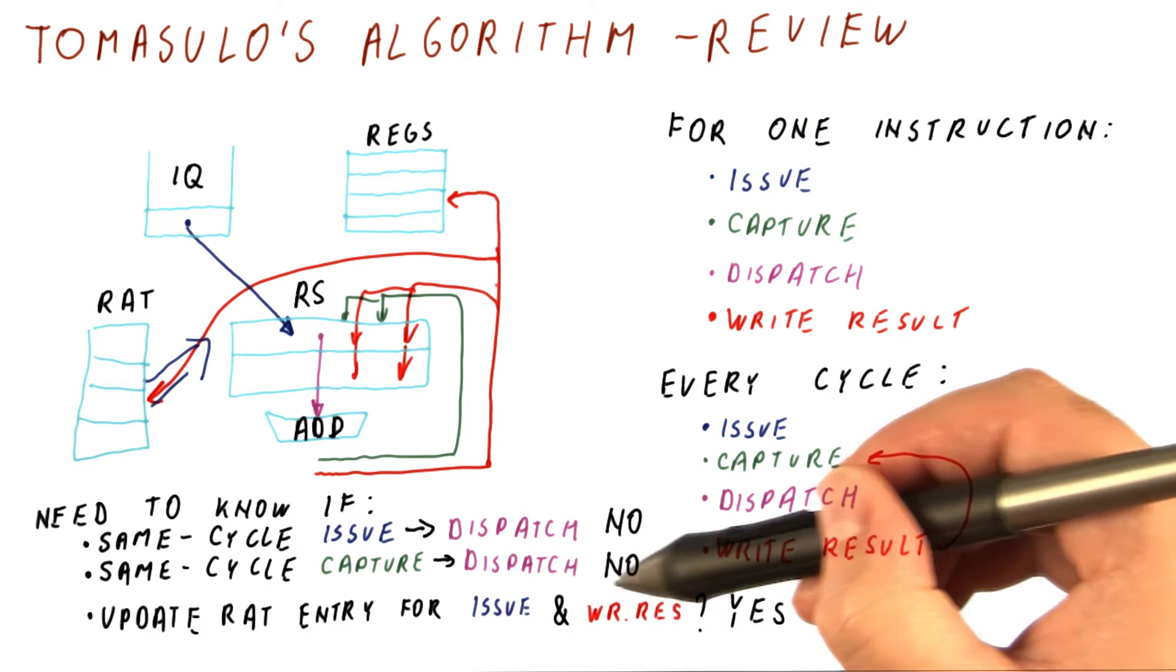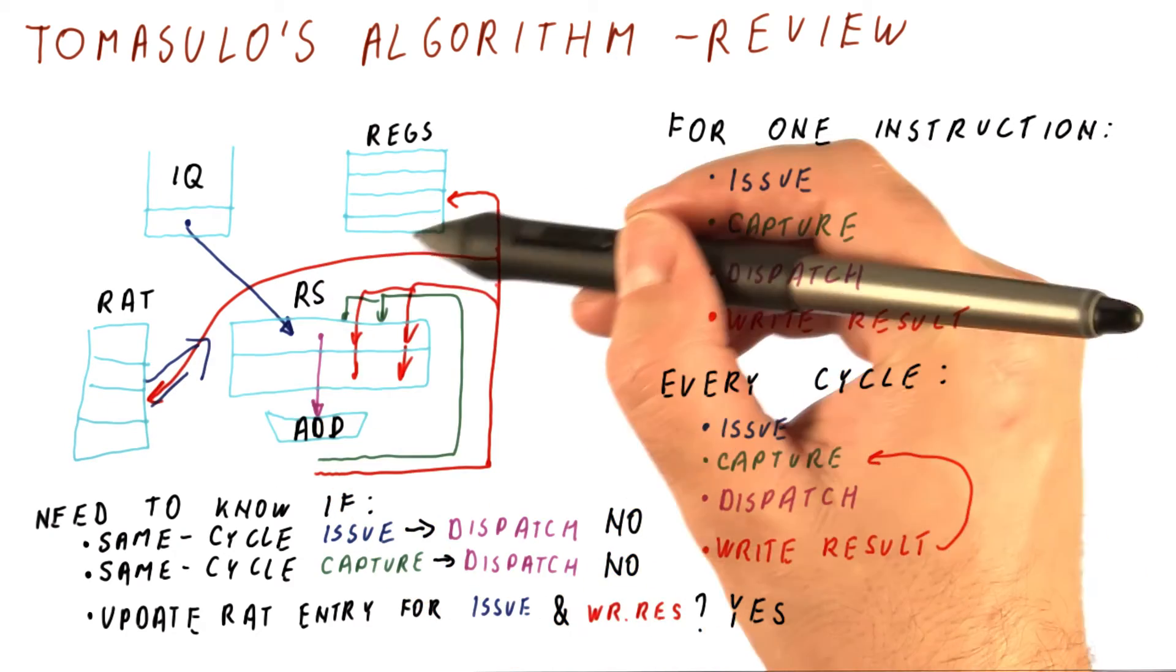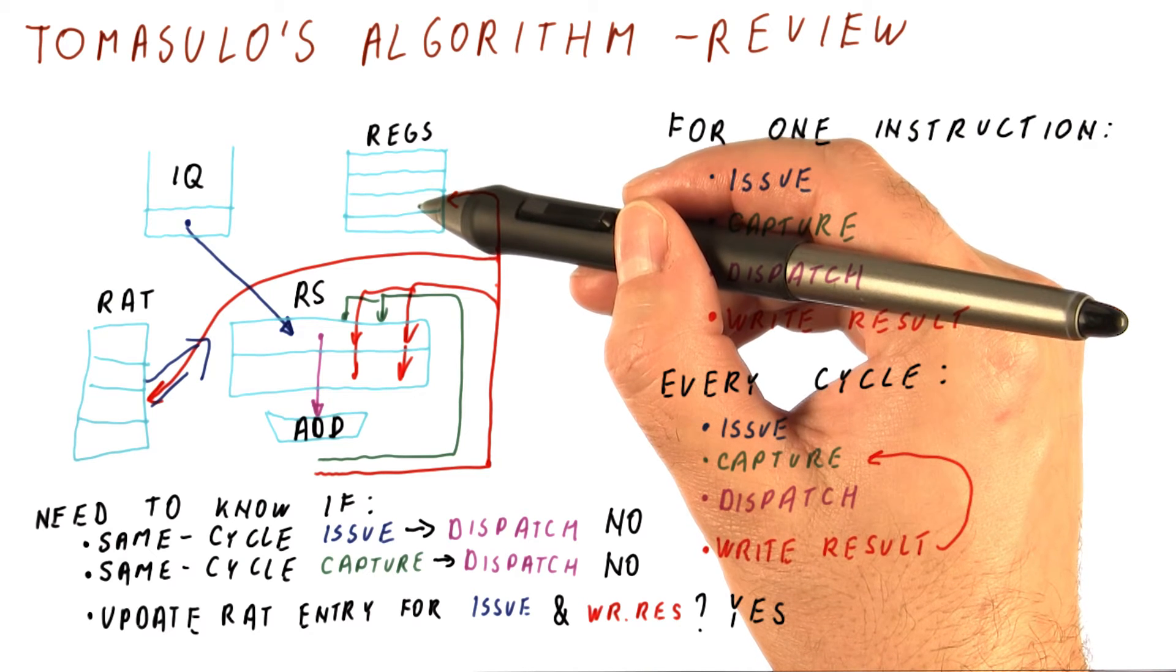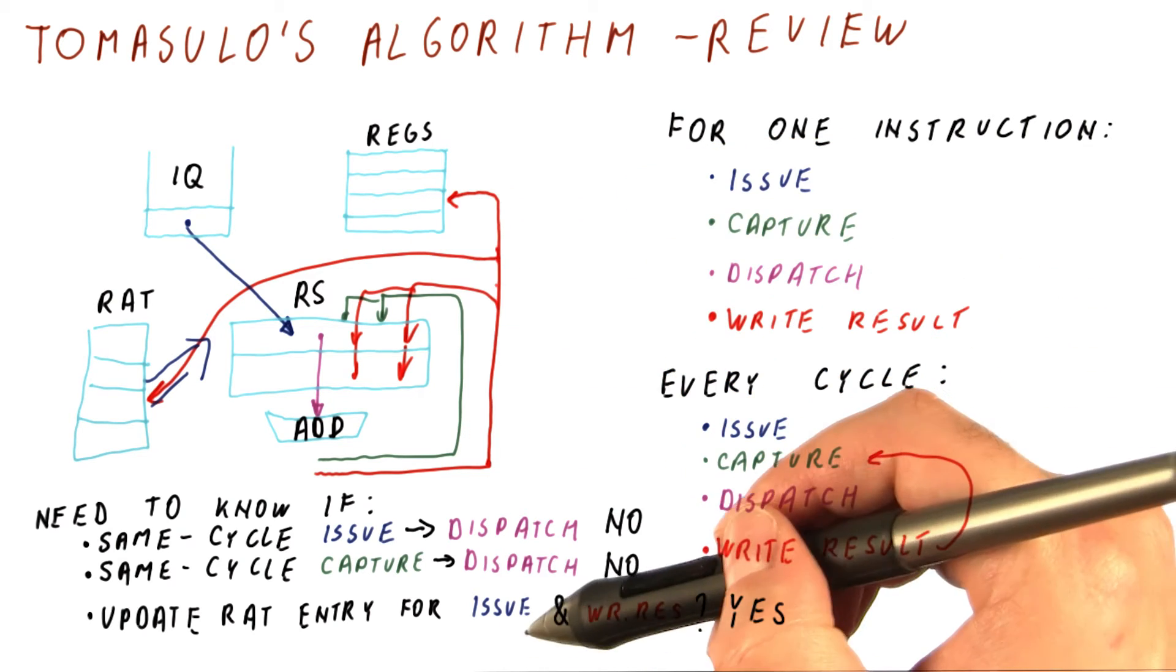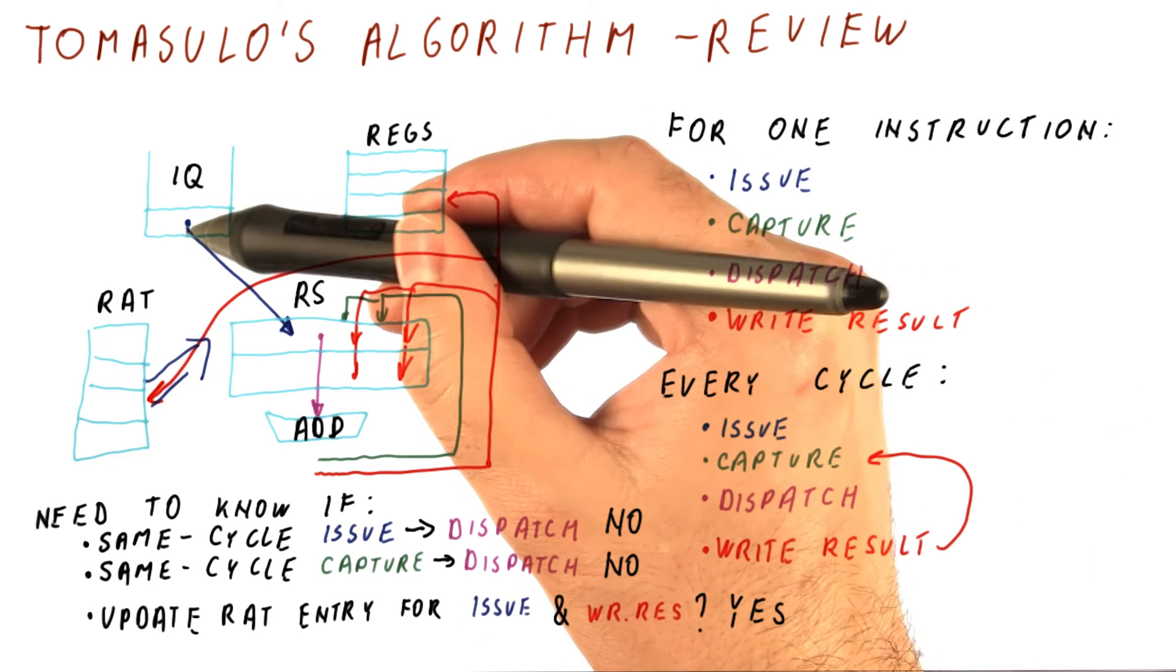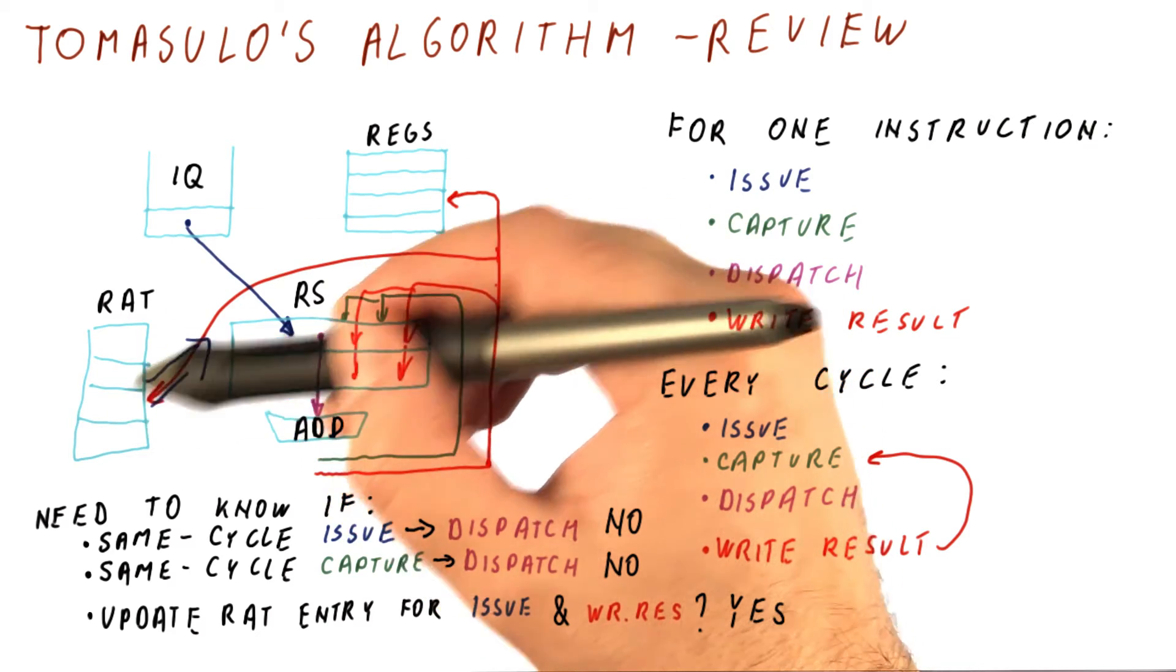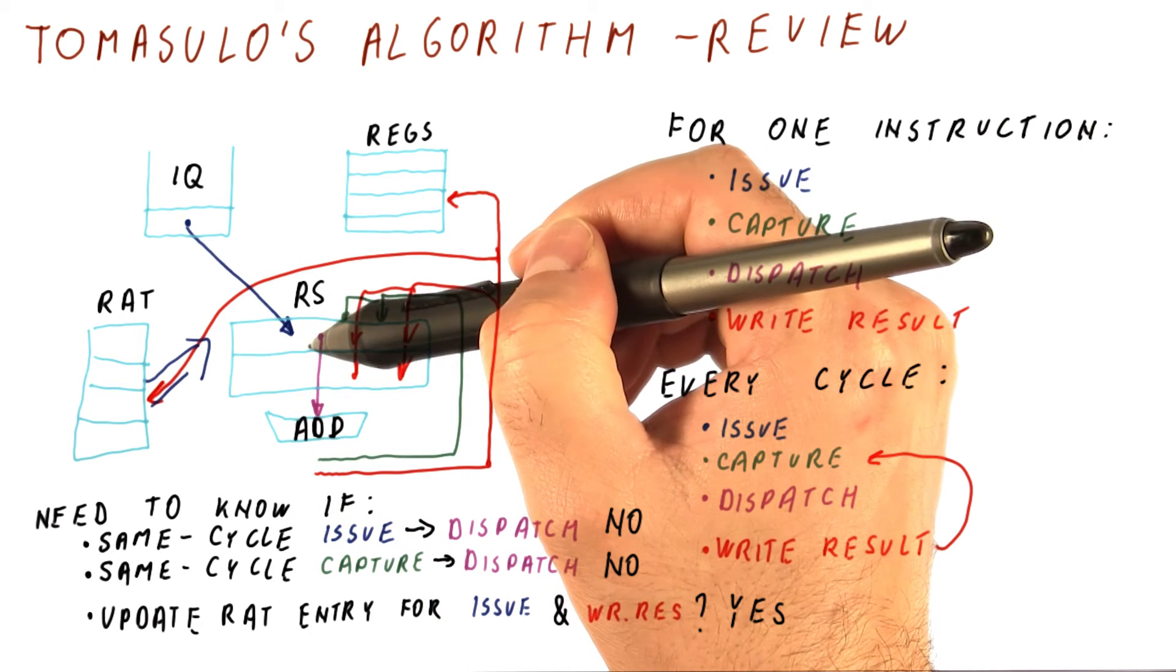Why? Well, because the write result instruction is trying to point others who need to read this register to the registers that it's going to write. Meanwhile, the issuing instruction, which is later in the program order, is telling the instructions that are going to issue after it, that they need to look at its reservation station for the result.